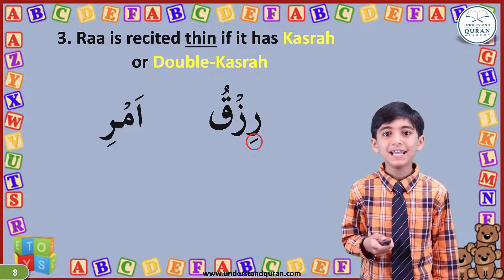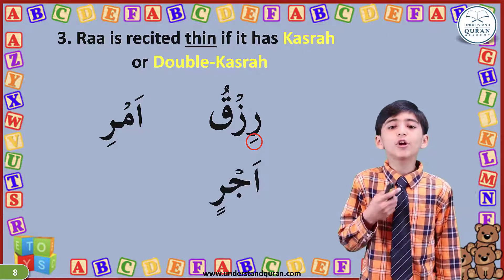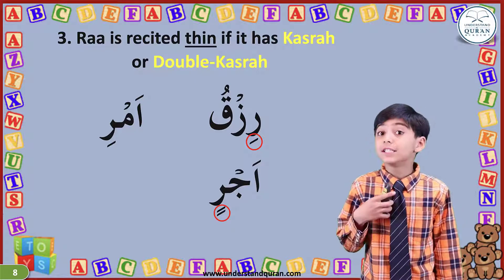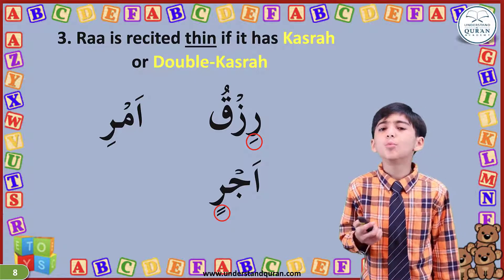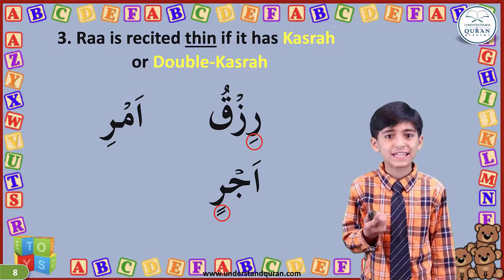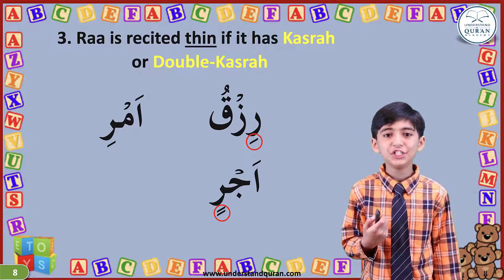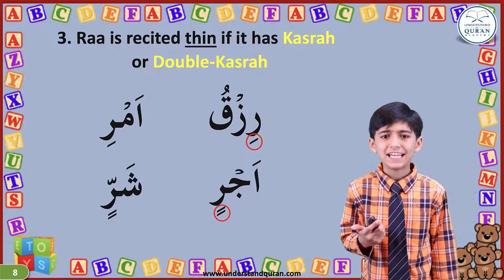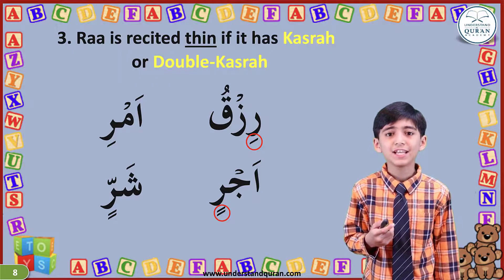Emri. Over here in Ejirin, the Ra has double kasra on it, that's why we must recite this Ra thin — Ejirin. Sharrin.